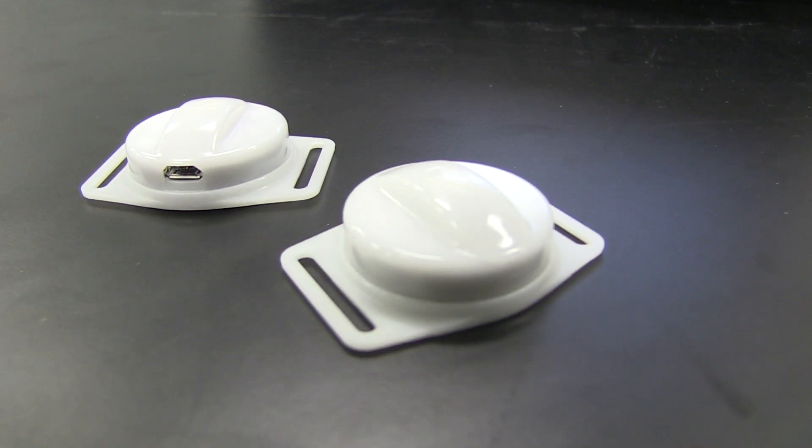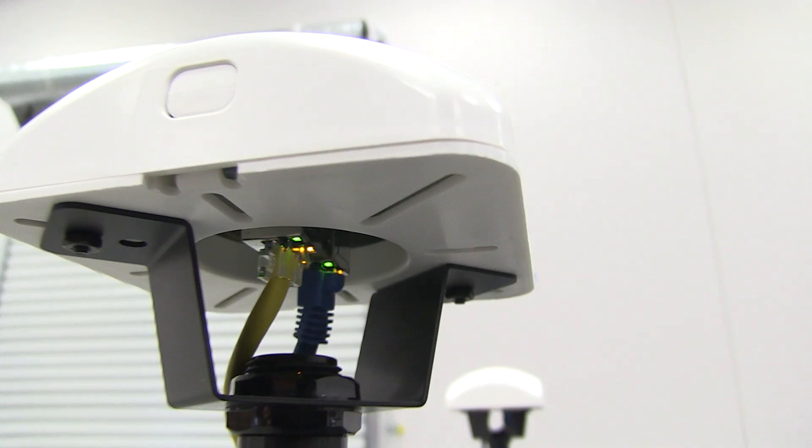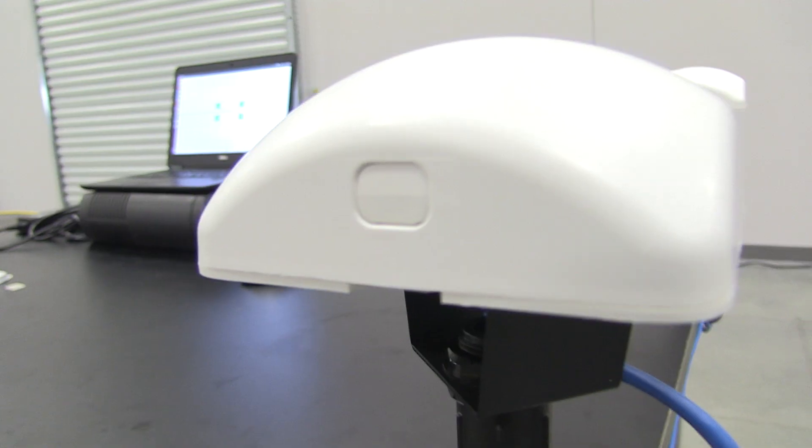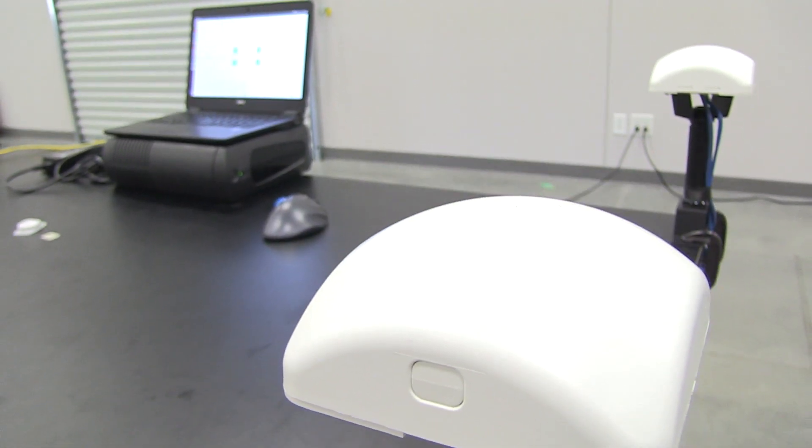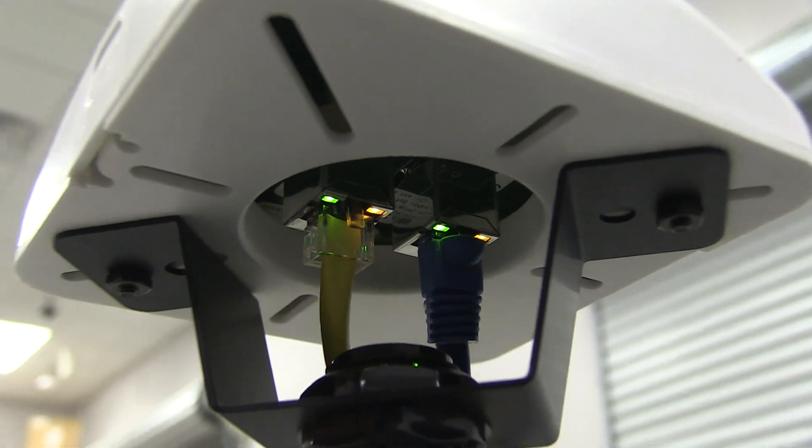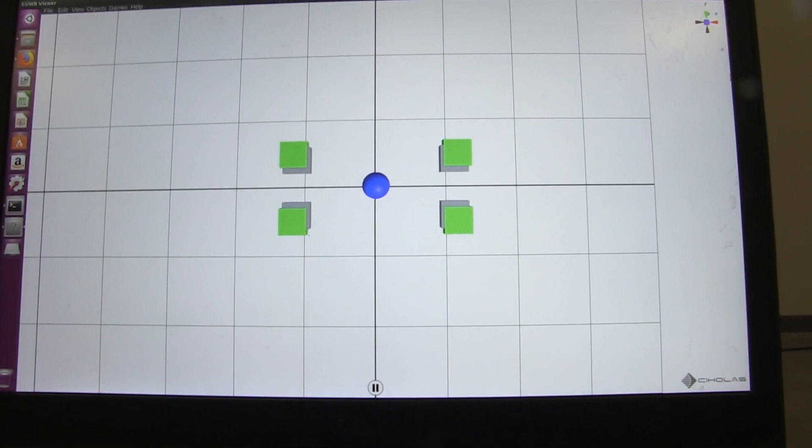For multi-ranging to work, each tag must communicate with a group of known anchors and perform a ranging operation with them. These measurements are then combined to create the required position solution.